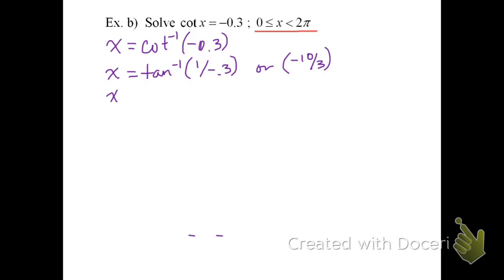Either way we do it, when we plug this into our calculator, if we're in radians, we should get a radian measure of negative 1.28 radians.